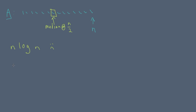We're going to look at a randomized algorithm that can find the median in linear time and has a high probability of successfully finding the median. Because the algorithm is randomized, we cannot guarantee that it will successfully find the median.